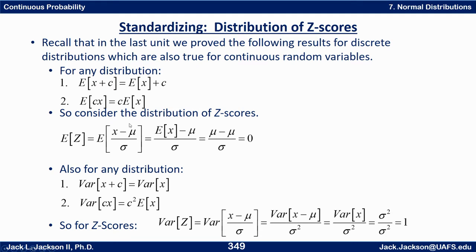So consider the distribution of z-scores. Remember a z-score z is x minus mu over sigma. So the expected value of z is the expected value of x minus mu over sigma. Remember mu and sigma are constants for a particular distribution. Because this is something on top divided by sigma — in other words multiplied by one over sigma — we can use rule 2 to say that's one over sigma times the expected value of the top.